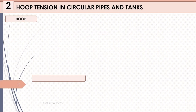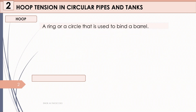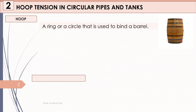A hoop is a ring or a circle that is used to bind a barrel. The metal rings you see on a barrel are a perfect example of a hoop. In simple terms, a hoop is like a belt that wraps around something just to keep it bound — like embracing an object to keep it tight and secure, like the perfect example of a barrel, since the contents of a barrel are usually a substance.